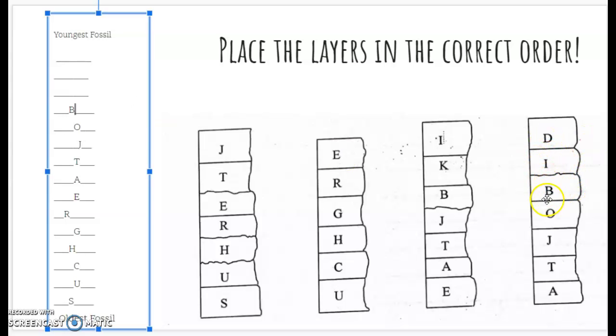So I have to find a letter B somewhere else in this column. And if I look over here in column three, look, I found another B. So I have a letter B, and then above that I have a letter K, and then I have a letter I. Now again, I've reached the top of my column.